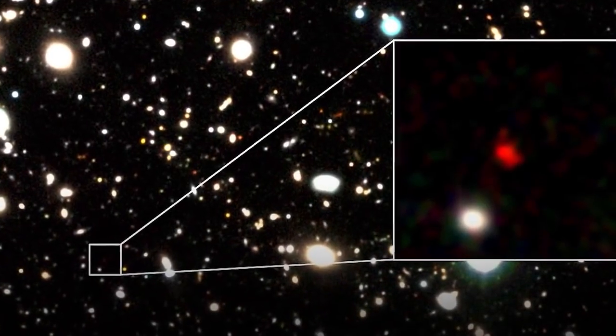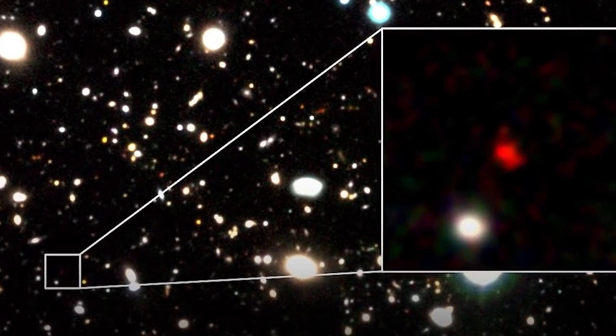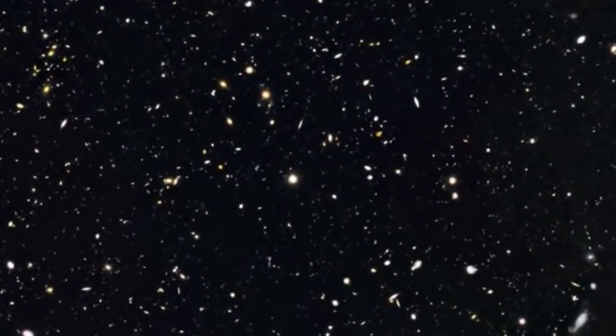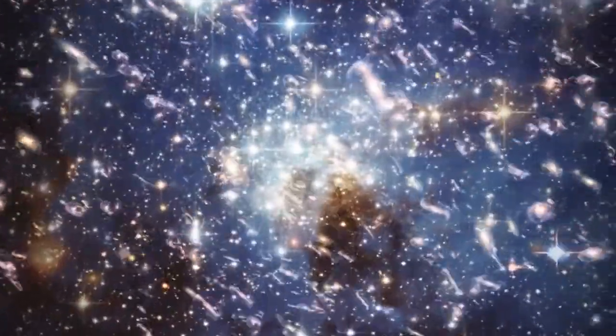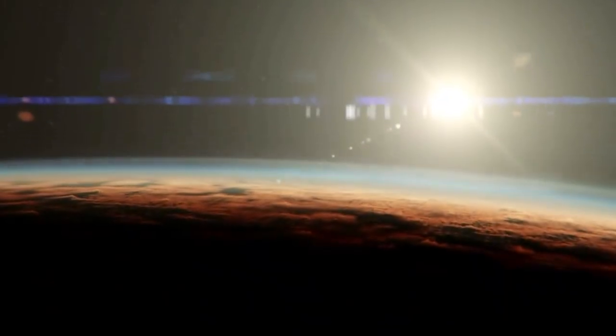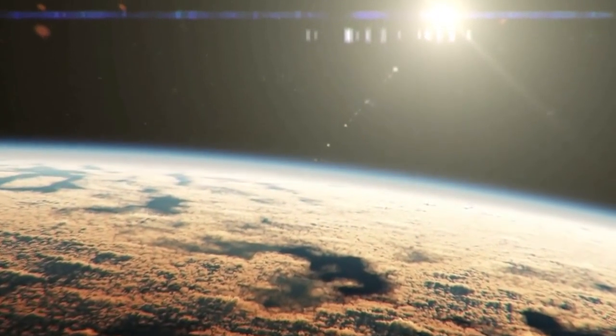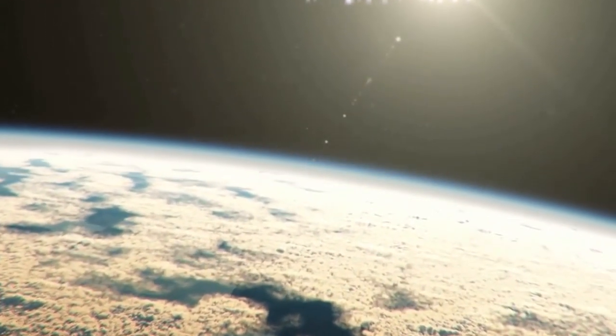JWST's primary mirror is made up of 18 hexagonal mirror segments composed of gold-plated beryllium that together form a 6.5-meter or 21-foot diameter mirror compared to Hubble's 2.4-meter or 7.9-feet. This offers the Webb Telescope a light-collecting area of around 25 square meters, which is approximately six times that of Hubble.